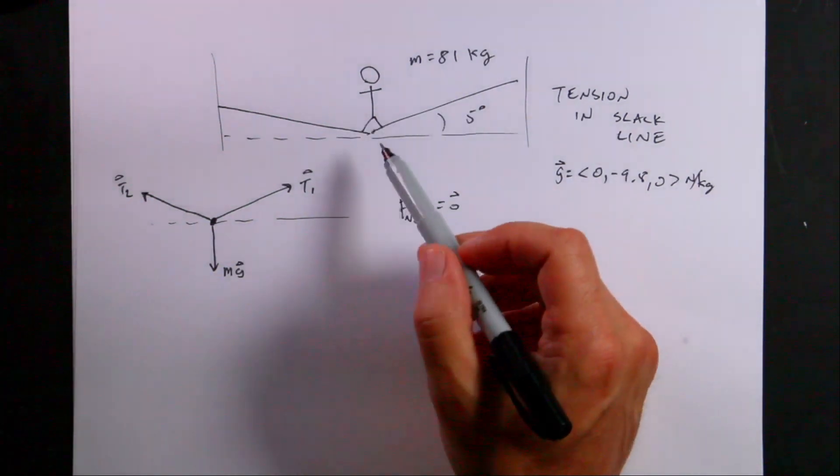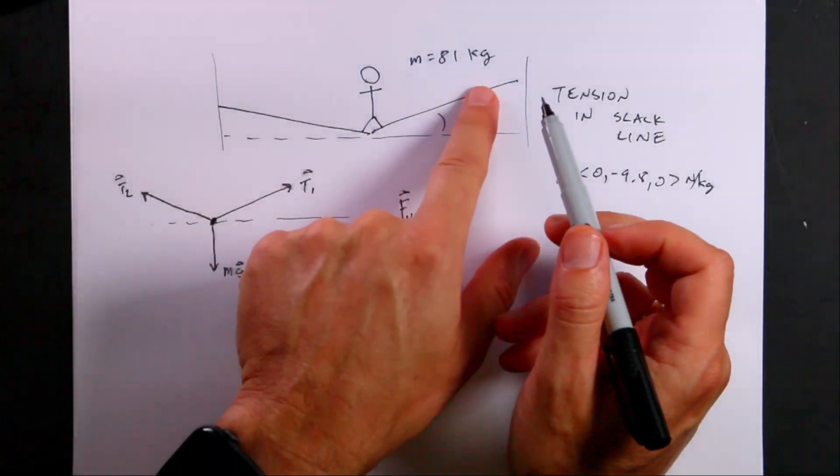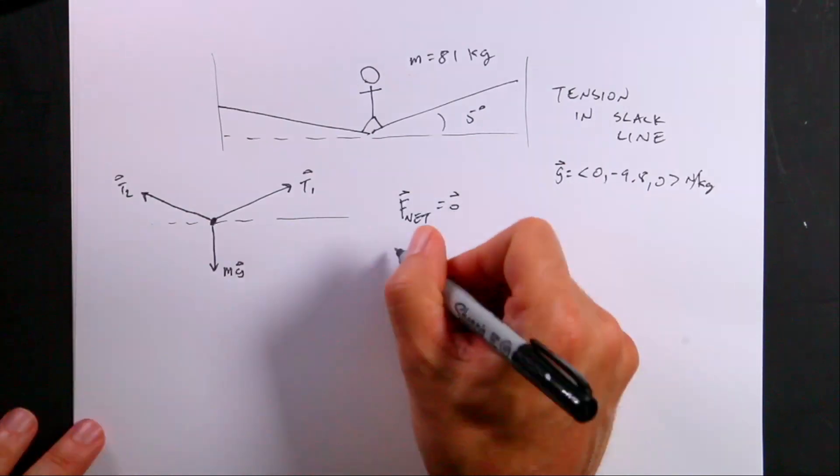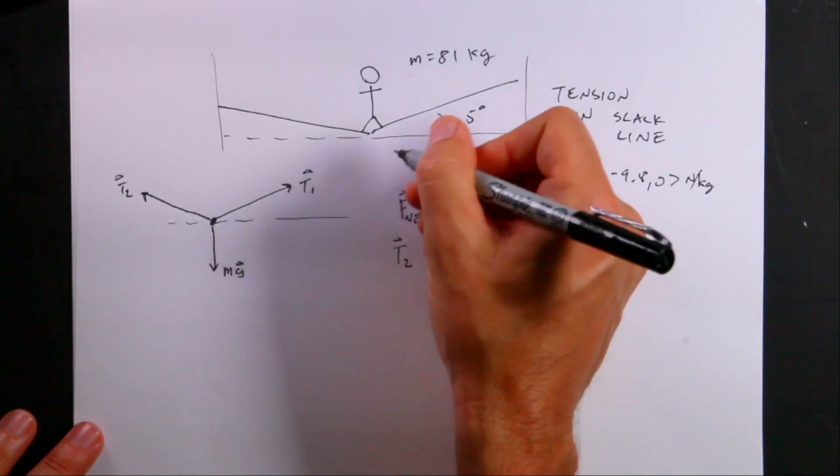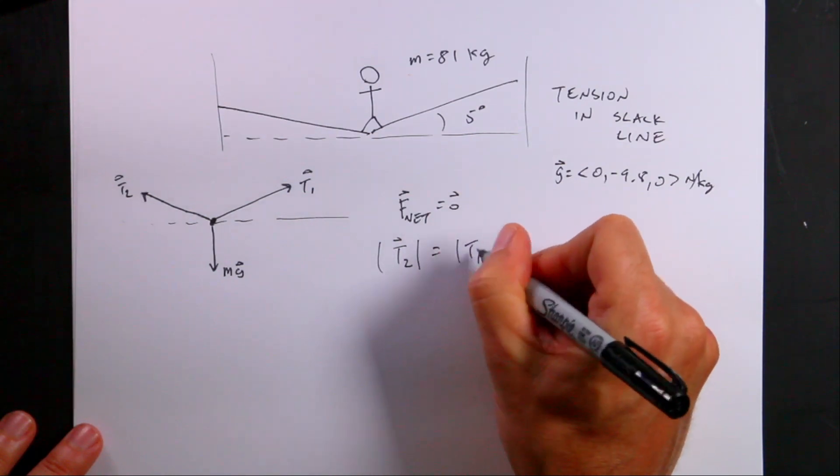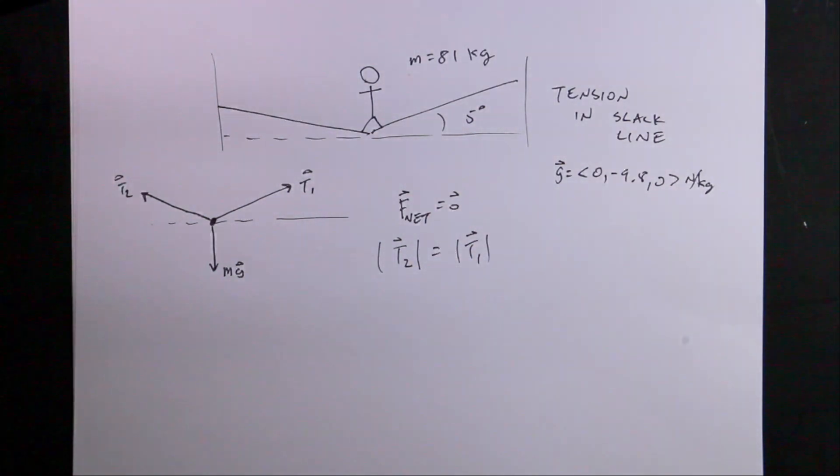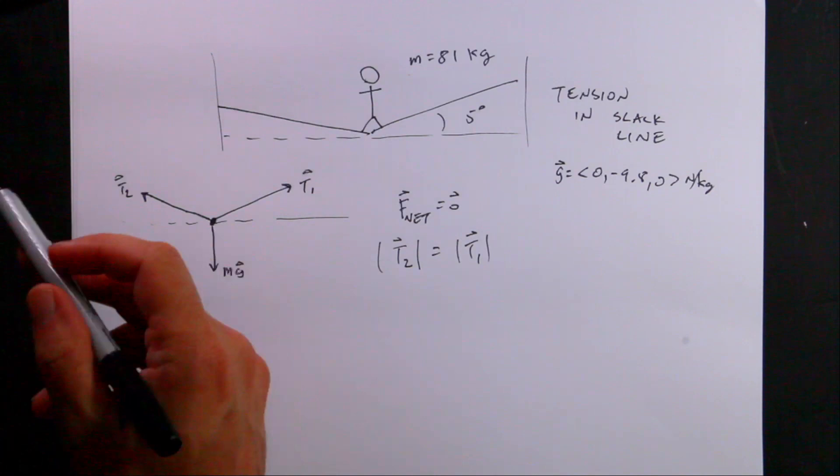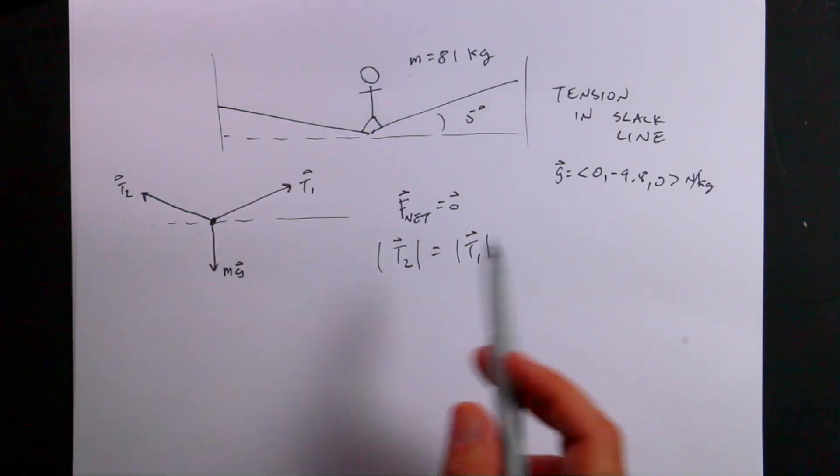then the magnitude of the tension at different points has to be the same. So that means that the magnitude of T2, the tension pulling to the left, the magnitude has to be equal to the magnitude of T1. Of course, they can't be the same force because one pulls up and to the left, one pulls up and to the right,